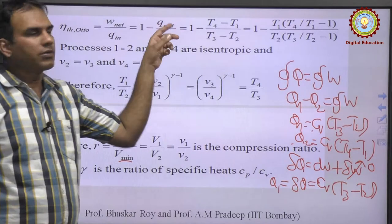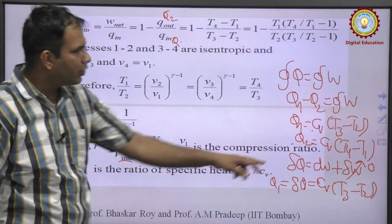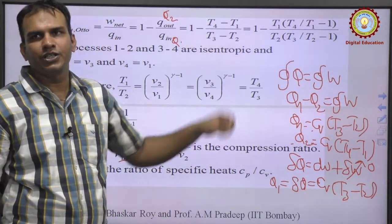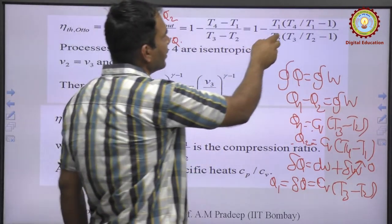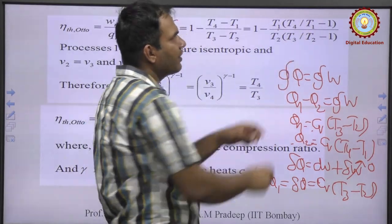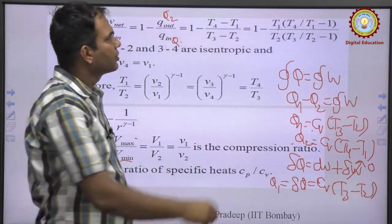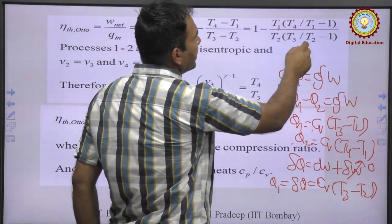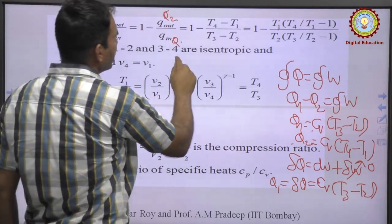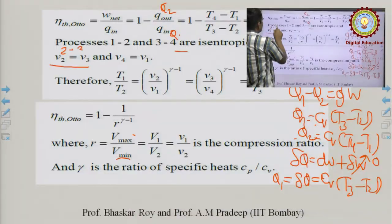Substituting into the efficiency expression, C_v cancels, giving η = 1 − (T₄ − T₁)/(T₃ − T₂). Taking T₁ common from the numerator and T₂ from the denominator gives η = 1 − [T₁(T₄/T₁ − 1)] / [T₂(T₃/T₂ − 1)]. Since 1→2 and 3→4 are isentropic, and 2→3 and 4→1 are isochoric, V₂ = V₃ and V₁ = V₄.